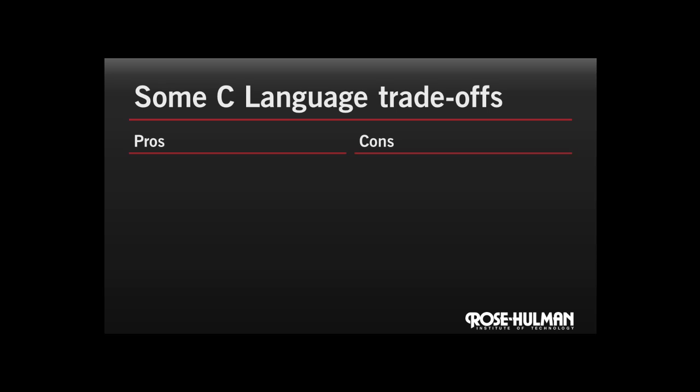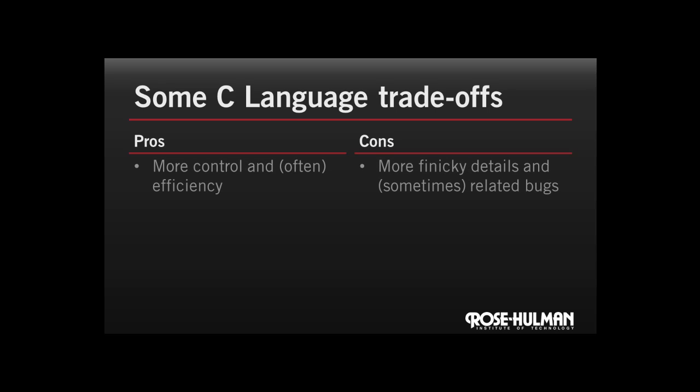So let's talk about some of the trade-offs that you encounter when programming in C. First of all, the programmer has more control. For example, C provides direct access to hardware, which is a good thing. However, there are fewer high-level language features, like built-in lists, classes, and objects, so the programmer sometimes has to deal with more finicky details.